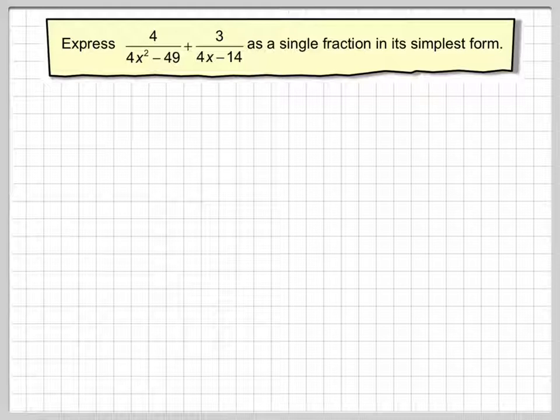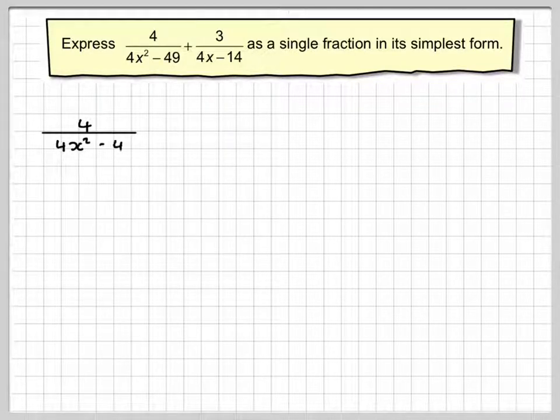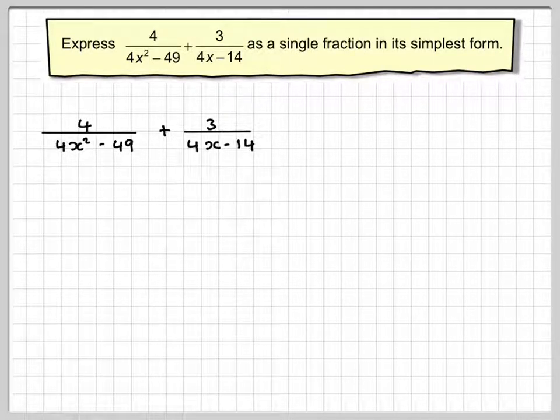Well, if you know how to add together fractions, i.e. you need the same common denominator, then you should be able to do this as well. So we've got 4 over 4x squared minus 49 plus 3 over 4x minus 14.